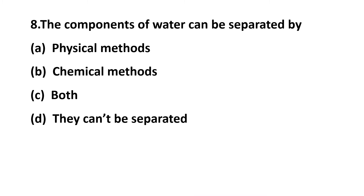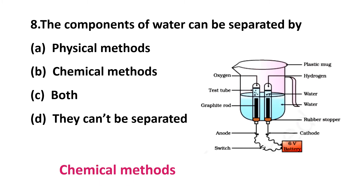Question 8: the components of water can be separated by — physical methods, chemical methods, both, or they cannot be separated. The components of water can be separated by evaporation, where water is converted into gas. Burning process is a chemical method, and electrolysis method can also split the components of water. So the components of water can be separated by chemical method.